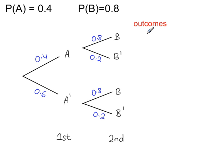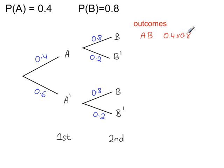We can list all of the outcomes possible for this probability tree. Following this path through the tree means event A happens and then B happens, so that's AB, and that has a probability of 0.4 times 0.8. This path is AB' with a probability of 0.4 times 0.2.